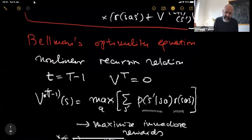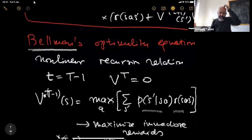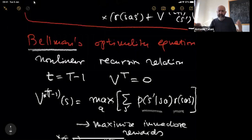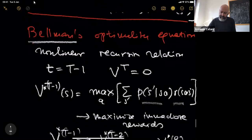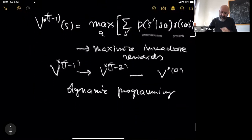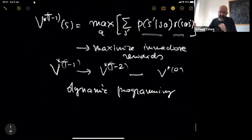These equations are due to the work of Richard Bellman, dating back to the 1950s. The formalization of decision processes and optimality equations essentially originates from that era.